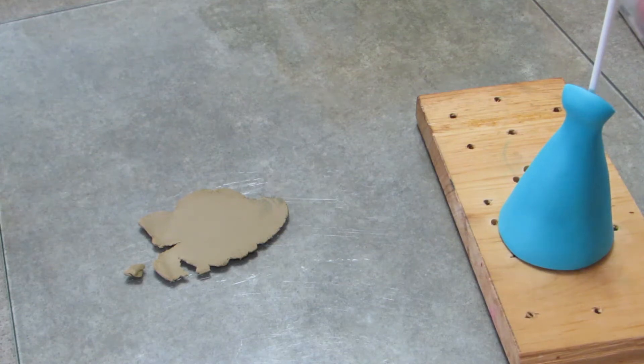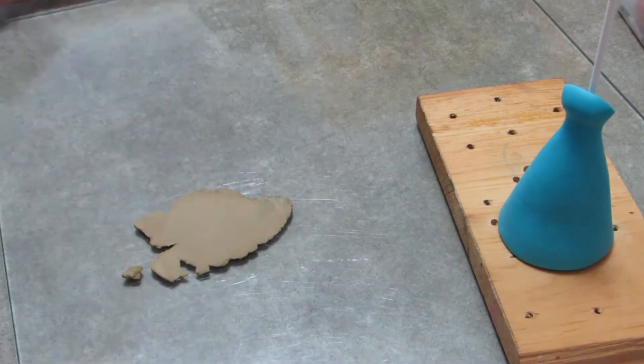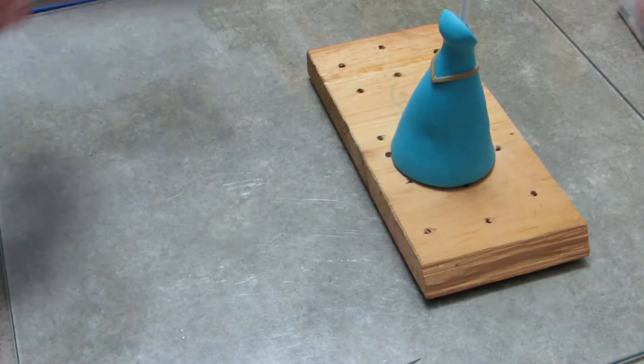I started out with the teal cone with basically a set of boobs on the top. I made it hollow so that it'll dry better. This brown I'm doing, I just cut out a thin strip to wrap around her waist.